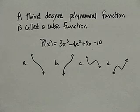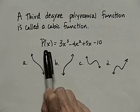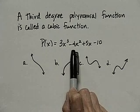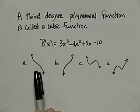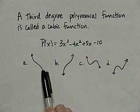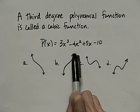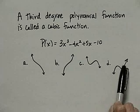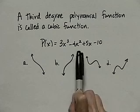Let's look at a specific one — a cubic or third degree polynomial. A third degree polynomial function is called a cubic function. Here's an example of a cubic: p of x equals 3x cubed minus 4x squared plus 5x minus 10. The graph of a cubic is going to fit into one of these four pictures. It's either going to be relatively smooth and always decreasing or always increasing, or perhaps have this behavior or this behavior. We'll look at ways to determine which of these graphs might fit the function shortly.